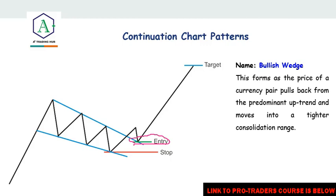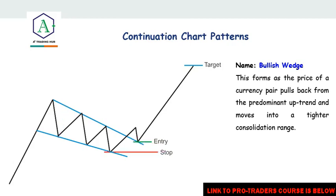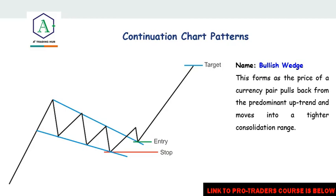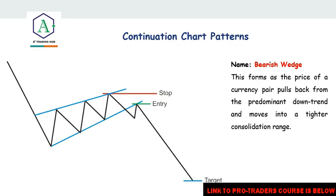Look for price rejections and bullish candlestick formations. When you see those candlestick formations, you take a buy and place your stop loss at the previous low. Your take profit will be exactly the same length as the first impulse — so if the first impulse was a 100-pip move, your target will also be 100 pips. You can use a trend line or a range tool in TradingView to measure this length. That is how you trade the bullish wedge. The next one is the bearish wedge, which is the opposite.